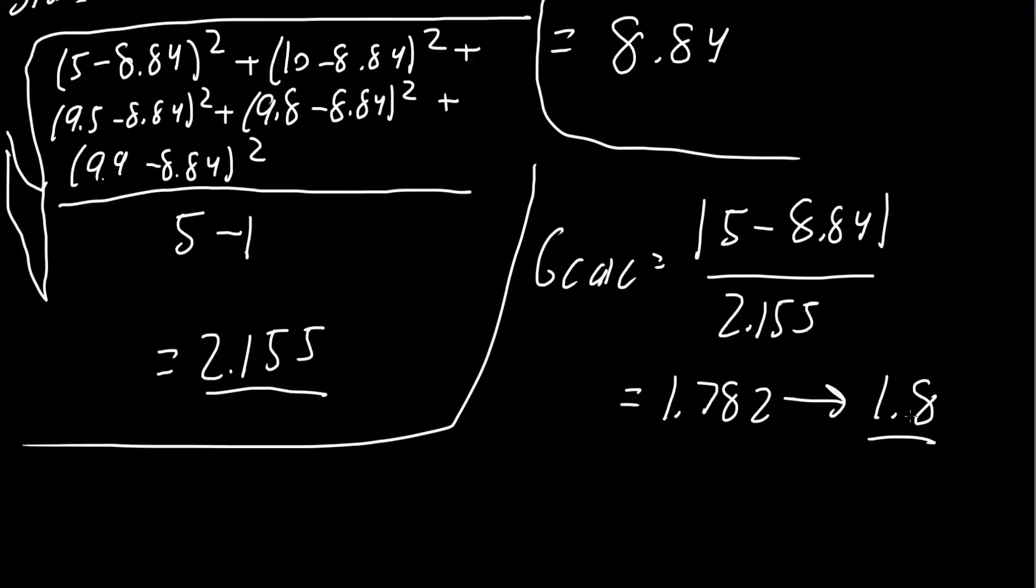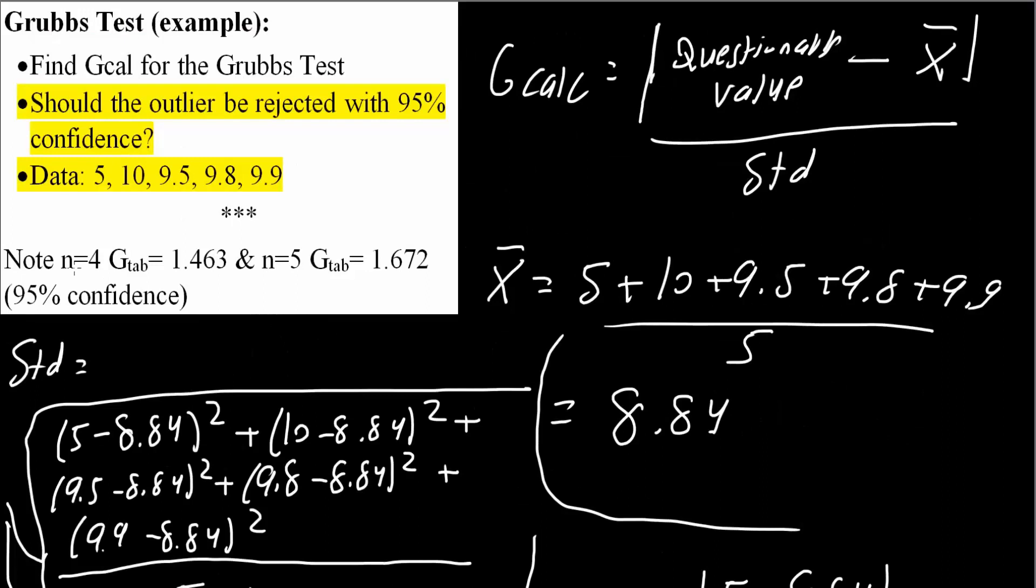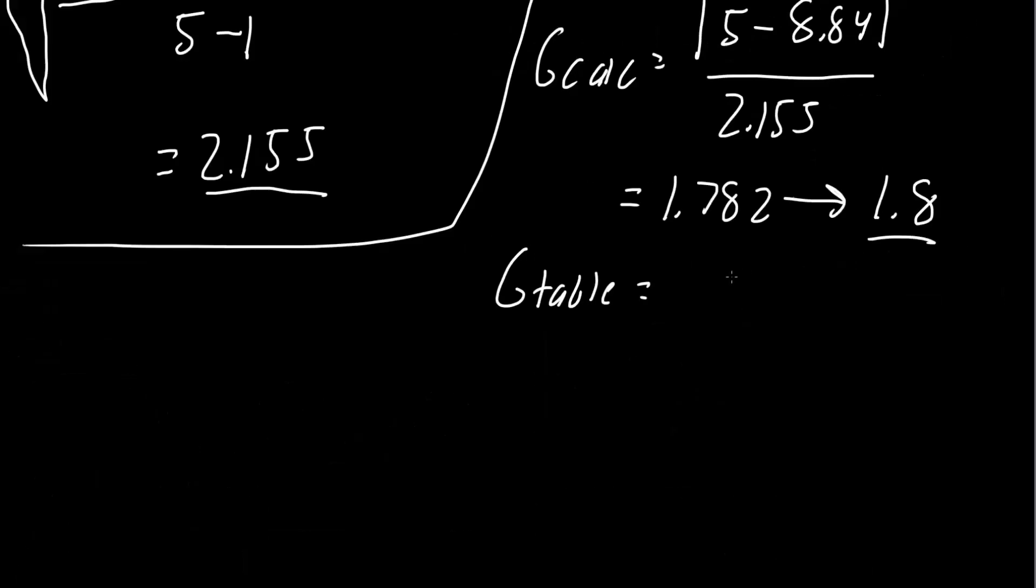In order to know if we should remove 5 with 95% confidence, we need to determine Gtable. If n equals 4, Gtable is 1.463. If n equals 5, Gtable is 1.672. This information would typically be given in a table. When n equals 5, Gtable for 95% confidence is 1.672.